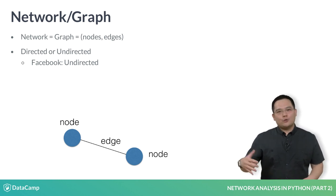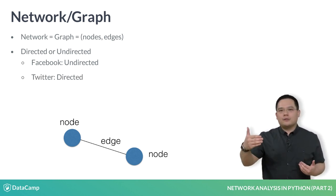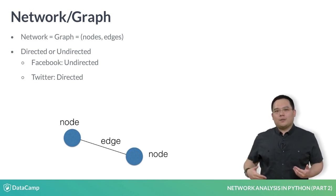On the other hand, if we look at the Twitter network, I may choose to follow another user, but that user may not necessarily follow me back. In this way, the Twitter social network is a directed network.